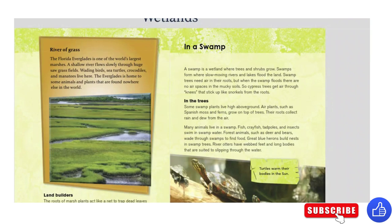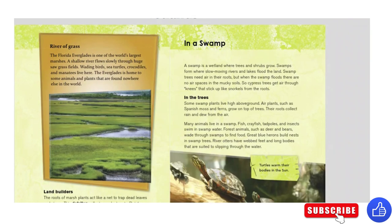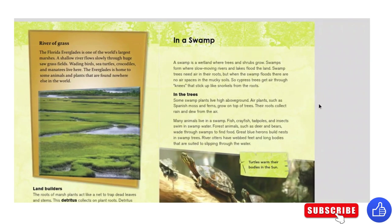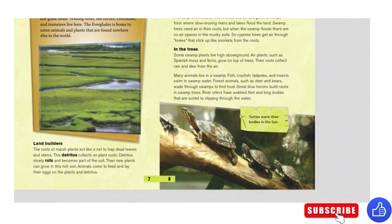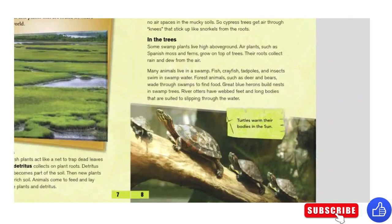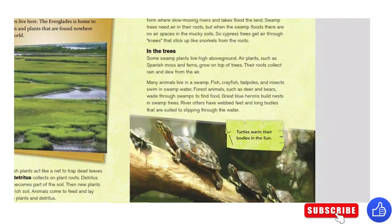In a swamp. A swamp is a wetland where trees and shrubs grow. Swamps form where slow-moving rivers and lakes flood the land. Swamp trees need air in their roots, but when the swamp floods, there are no air spaces in the muddy soils. So cypress trees get air through knees that stick up like snorkels from the roots. In the trees, some swamp plants live high above ground. Air plants, such as Spanish moss and ferns, grow on top of trees. Their roots collect rain and dew from the air.